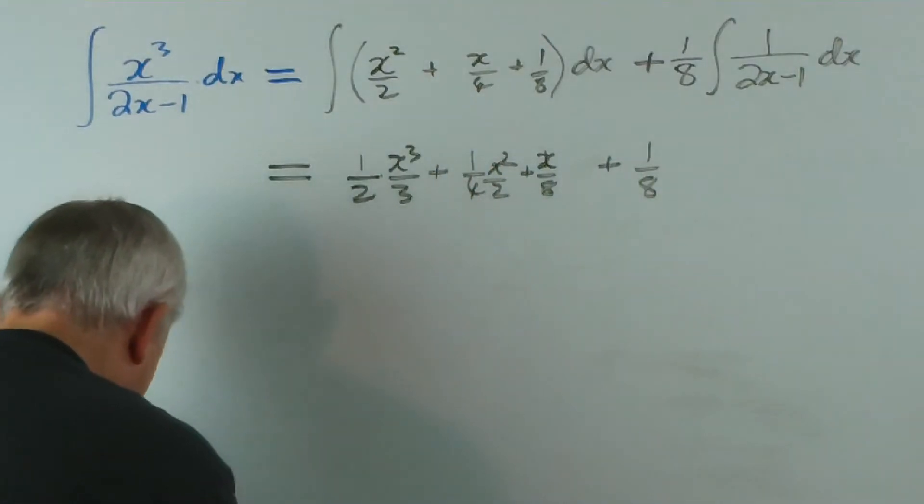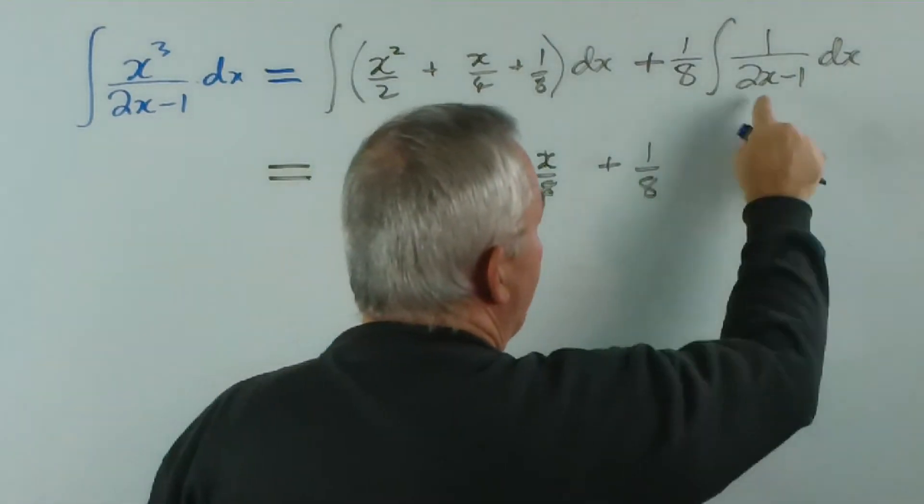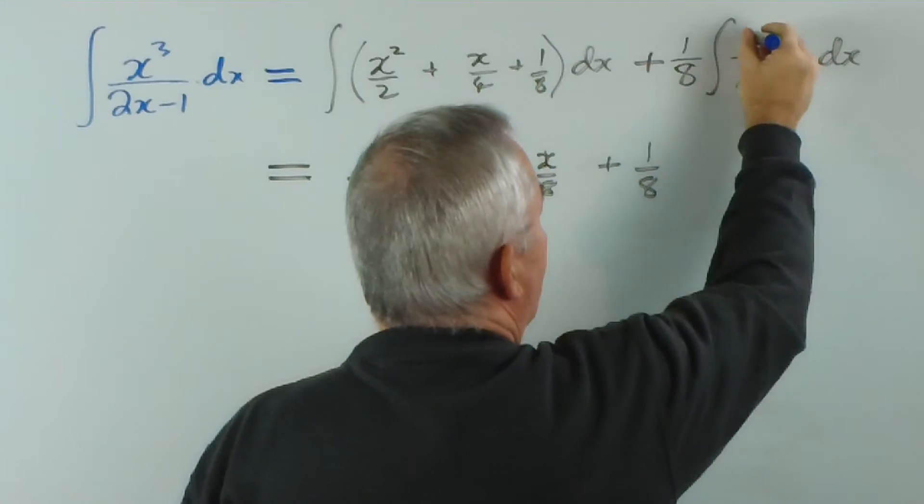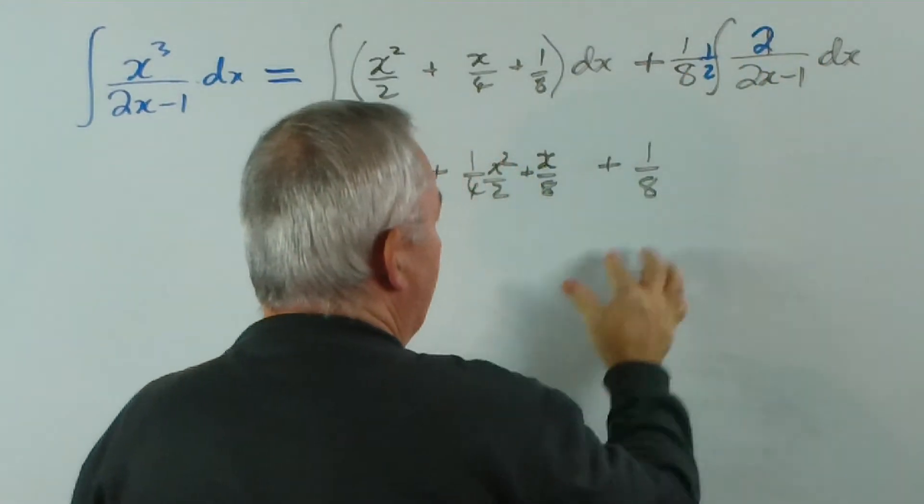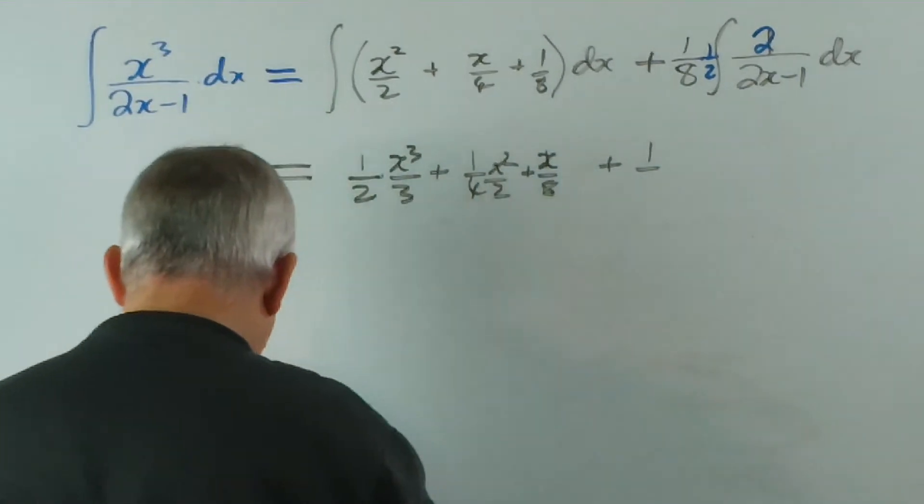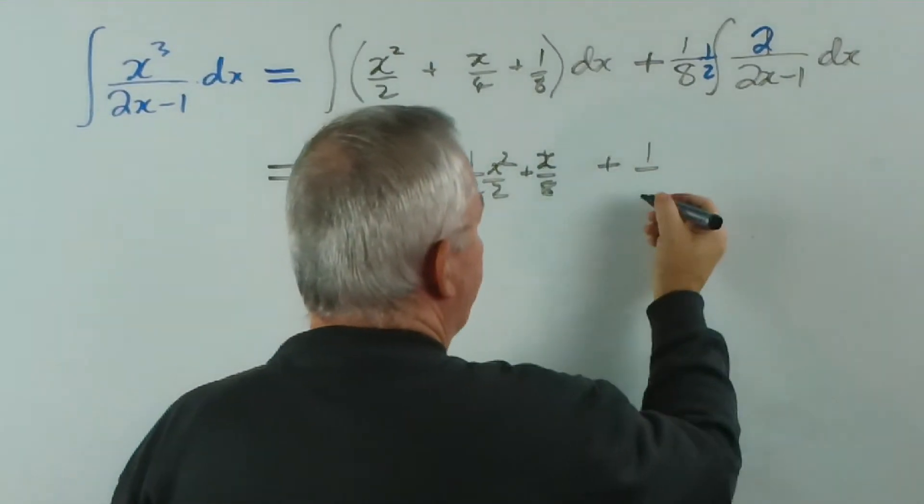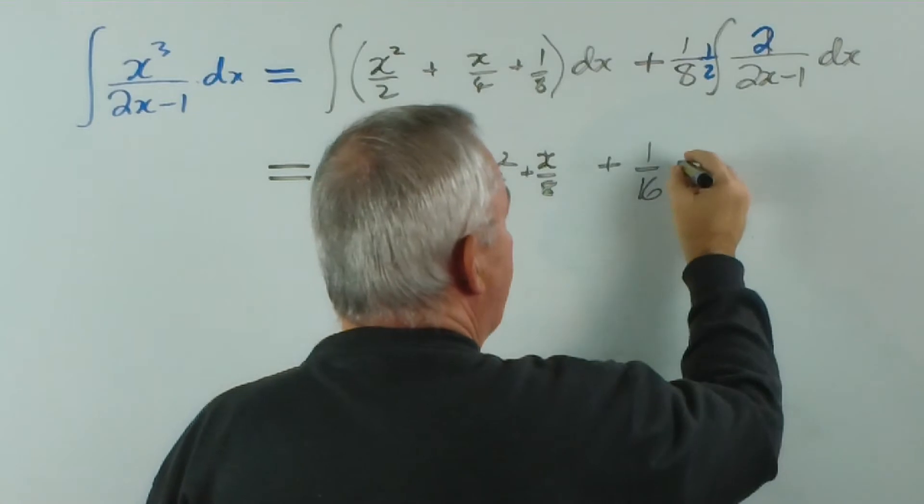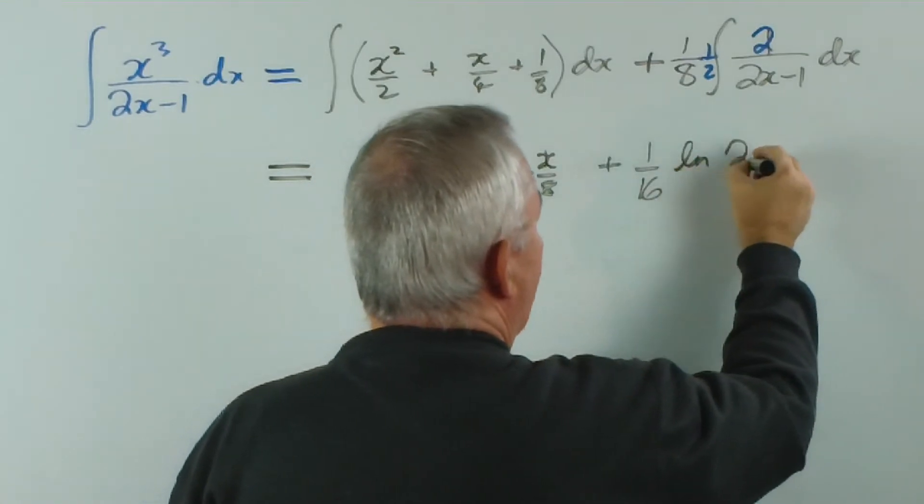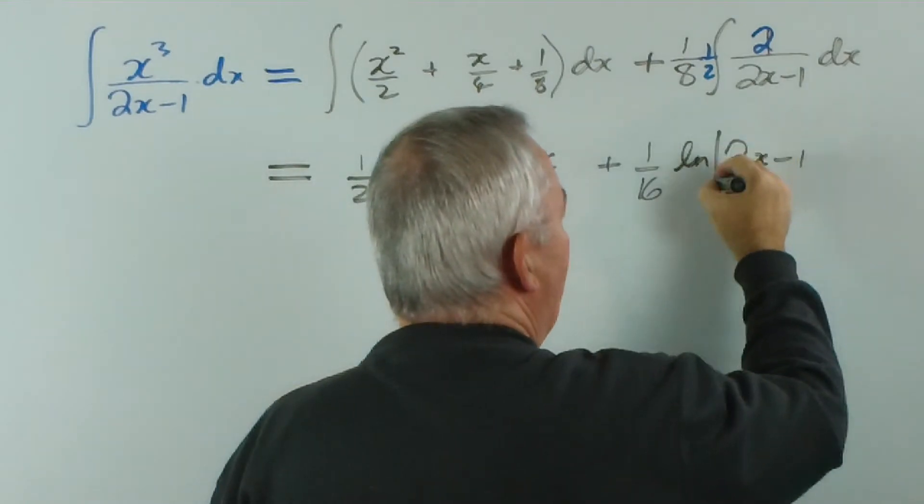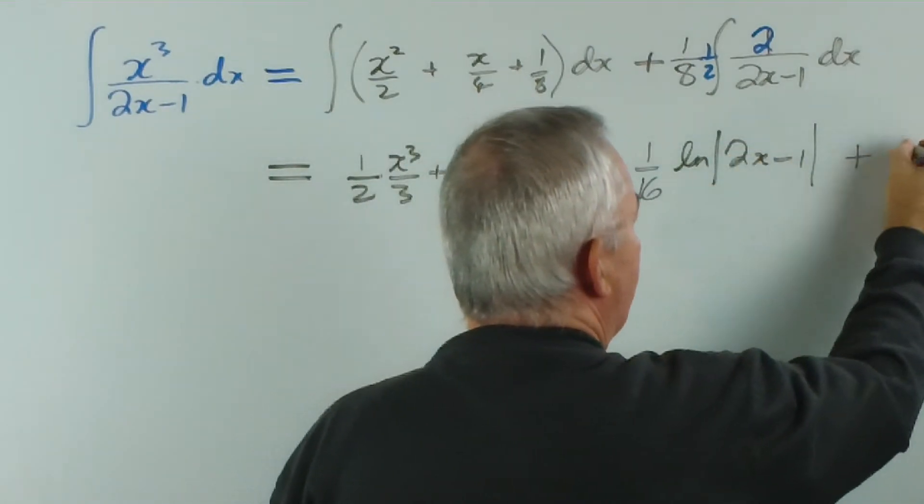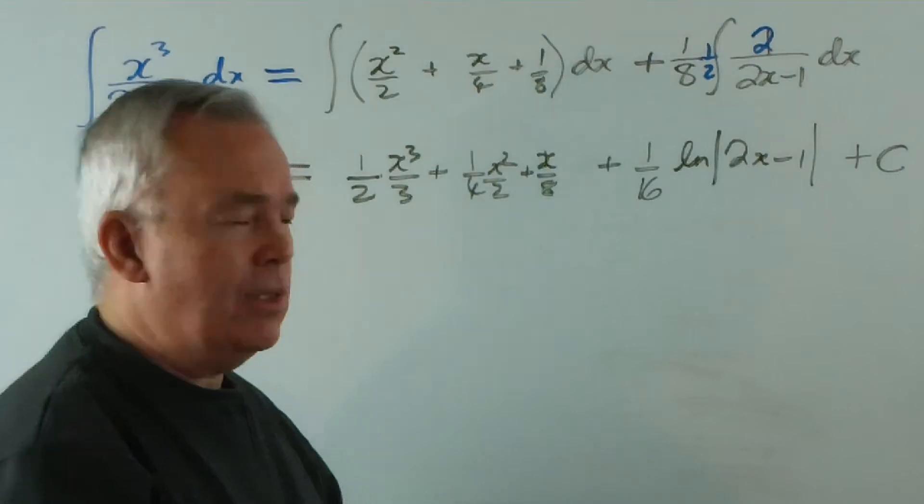I'll get my blue pen. Because the derivative of 2x is 2, I'm going to put a 2 there and compensate with a half out the front. So, that's not actually an eighth, it's 1/16th of the logarithm of 2x minus 1. Because it can assume or take negative values, I'll use absolute value, plus c.